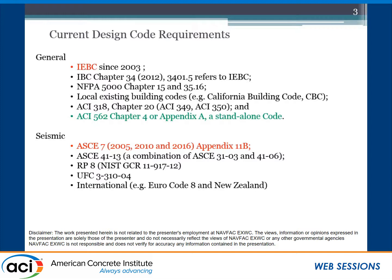Current code requirements for existing concrete structures: there is IEBC since 2003, IBC Chapter 34 talking about existing structures, and the local existing building code like the California building code. ACI 318 Chapter 20 covers existing structures and how to do load testing. The newly published ACI 562 is about repairs. And for seismic, there are many papers and literature, and ACI 7 Appendix 11B has one page dealing specifically with seismic only.